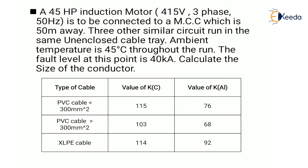Here we have a table showing the type of cable and the value of K, which is the constant associated with the type of conductor — for copper and aluminum. For PVC cable less than 300 mm², K for copper is 115 and for aluminum is 76. For PVC cable greater than 300 mm², K for copper is 103 and for aluminum is 68. For XLPE cable, K for copper is 114 and for aluminum is 92.